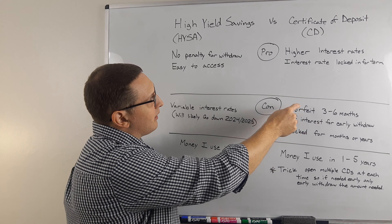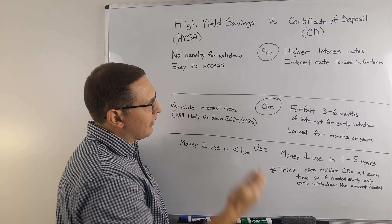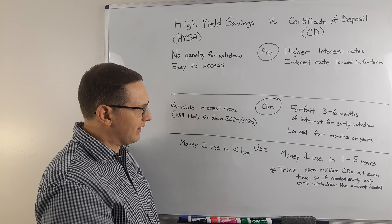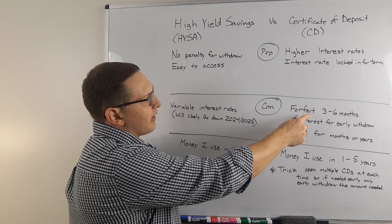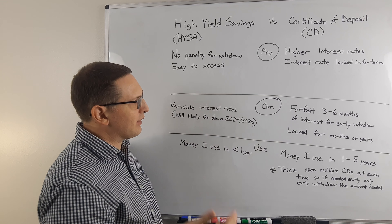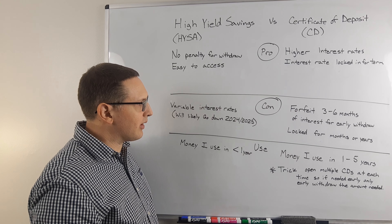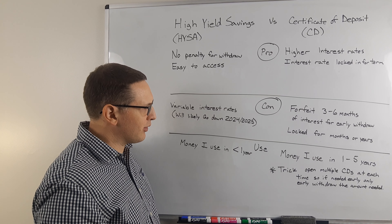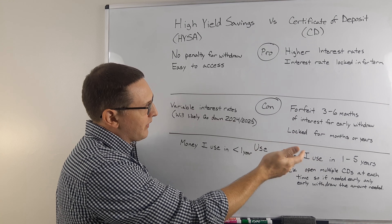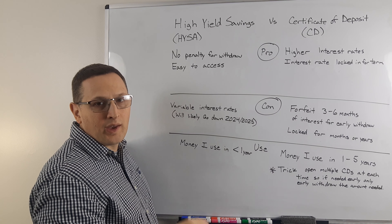The con of a CD is that, generally speaking, depending on the length of the term, you usually have to forfeit the last three to six months of any interest that the account would have accrued — and that's for an early withdrawal.